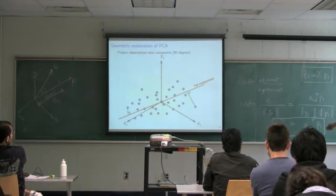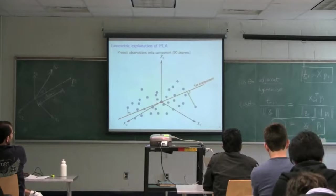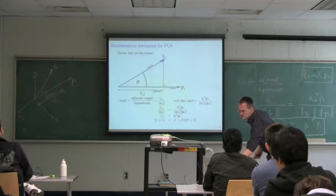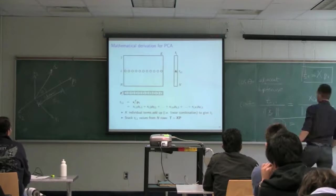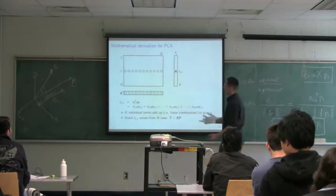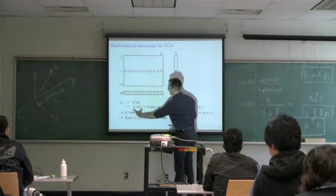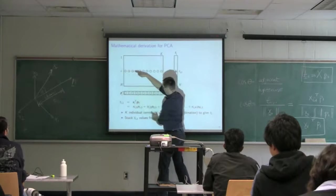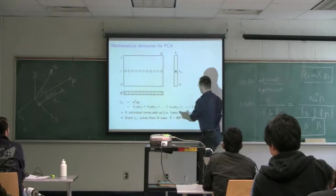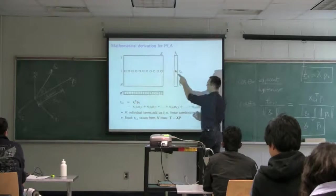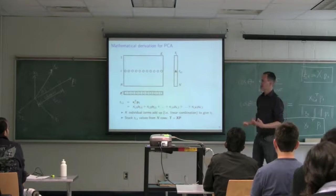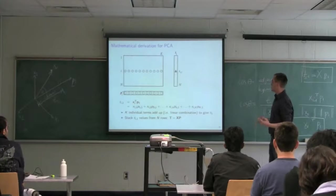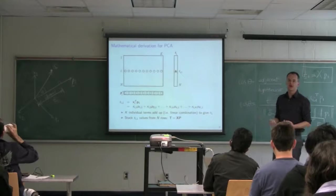To make sure nothing is missed: x_i1 times p_11, plus the term from the second column, plus the third column, and so on, combining through the last column gives the scalar value t_i1. That's what the linear combination is. So t_i is a linear combination of the x values given by the coefficients in p.